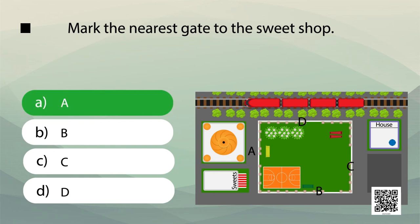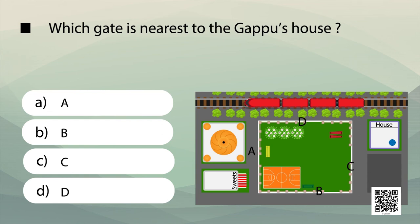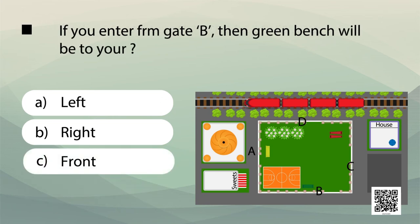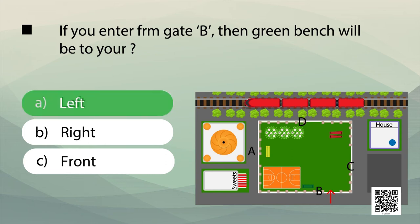Which gate is nearest to Gapu's house? The right answer is gate C. Now another question: if you enter from gate B, will the green bench be to your left, right, or front? The right answer is on your left.